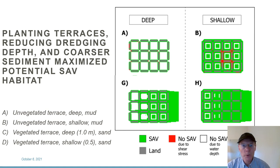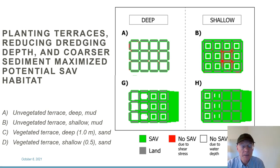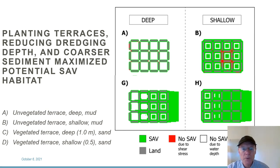This is the seagrass output. Green is potential SAV habitat. Red is no SAV due to the shear stress being too high at the sediment and removing the seagrass, and white is no seagrass due to depth. A and B were where there was no emergent vegetation on top of the terraces and mud sediment, and on the bottom it's sand sediment, vegetated with emergent grass above the waterline. The shallow configuration with sand and a vegetated terrace creates the maximum amount of potential seagrass habitat.